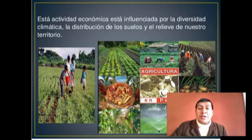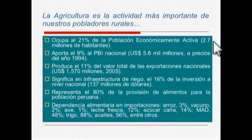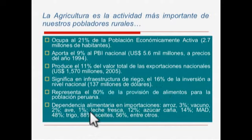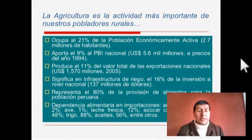El agro es la salida a nuestra pobreza. La agricultura es la actividad más importante en nuestros pobladores rurales: ocupa el 21% de la población económicamente activa, o sea 2.7 millones de habitantes se dedican a la agricultura. Aporta el 9% al PBI nacional, que son 5,600 millones anuales. Produce el 11% del valor total de las exportaciones nacionales, unos 1,570 millones al año 2005. Representa infraestructura de riego el 16% de la inversión a nivel nacional, 137 millones de dólares. Representa el 80% de la provisión de alimentos para la población peruana.